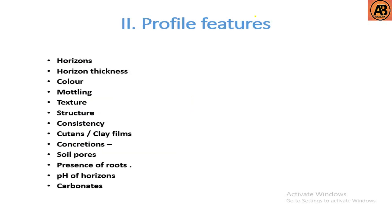Profile features for soil survey include: horizons, horizon thickness, color, mottling, texture, structure, consistency, cutans or clay films, concretions, soil pores, presence of roots, pH of horizons, and carbonates.